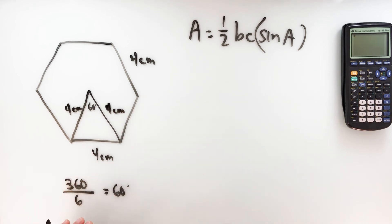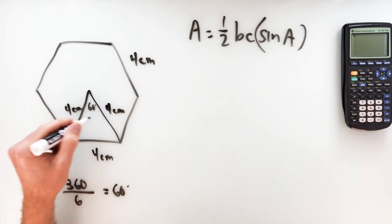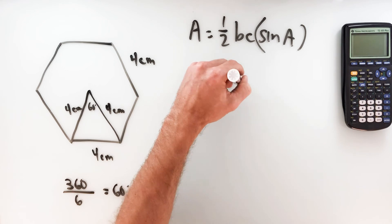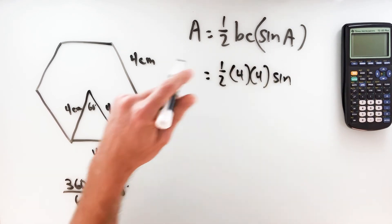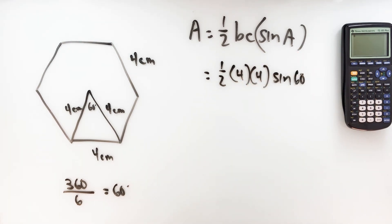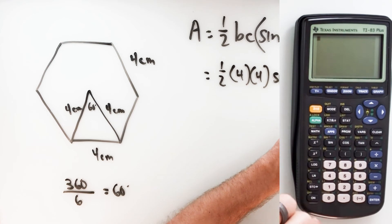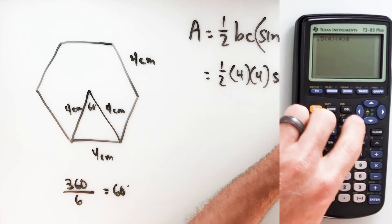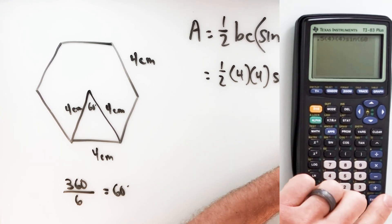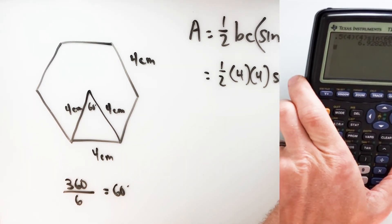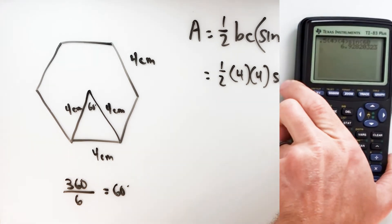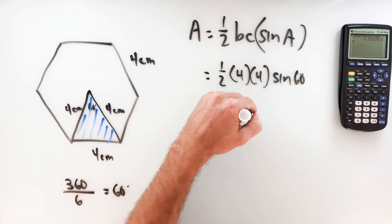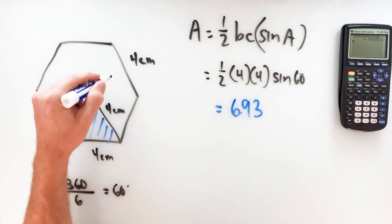I could draw the apothem down and do some 30-60-90s, but we're just going to use this. I've got two sides and the angle in between them, so I'll plug that in and find the area of the triangle. Area equals one half times B and C — both four — times the sine of 60 degrees. Going to the calculator: 0.5 times 4 times 4 times sine of 60. We get about 6.93. So the area of this triangle is 6.93 square centimeters.